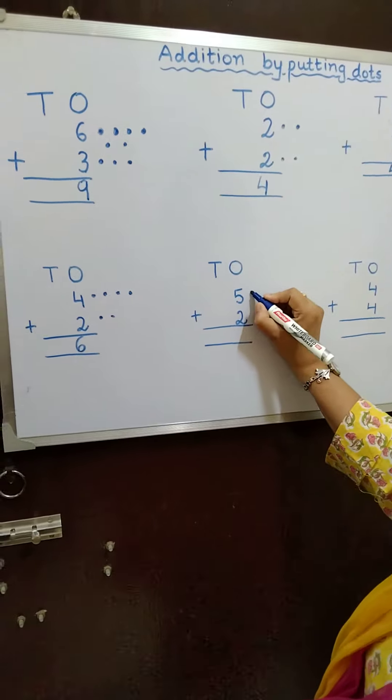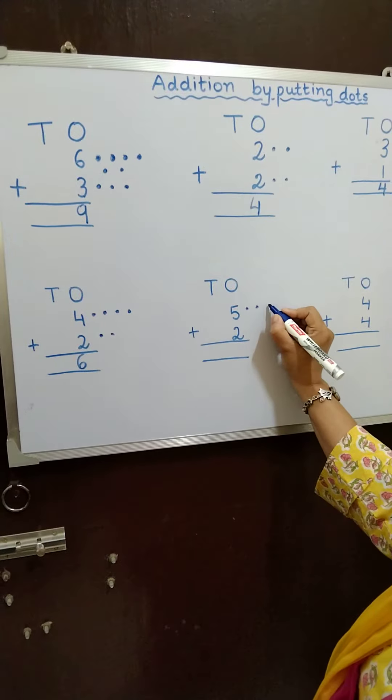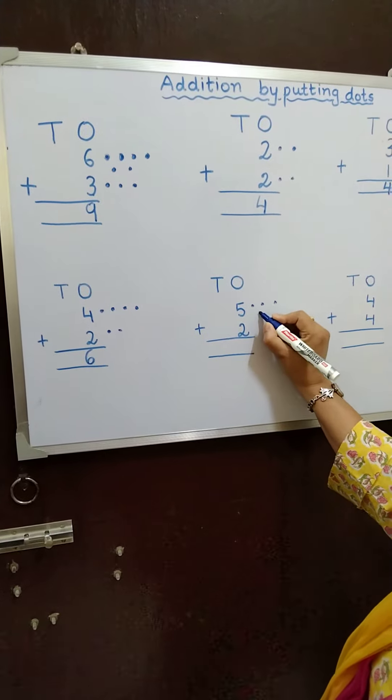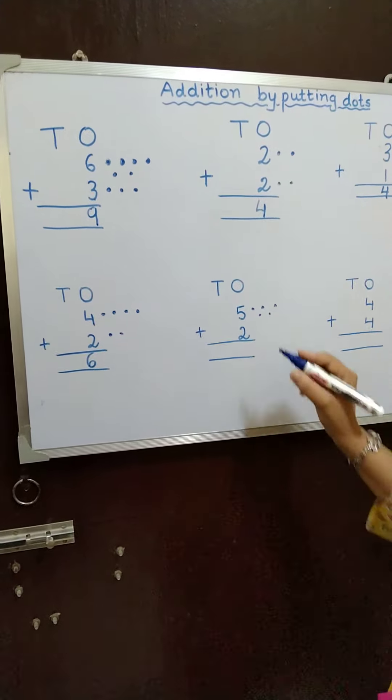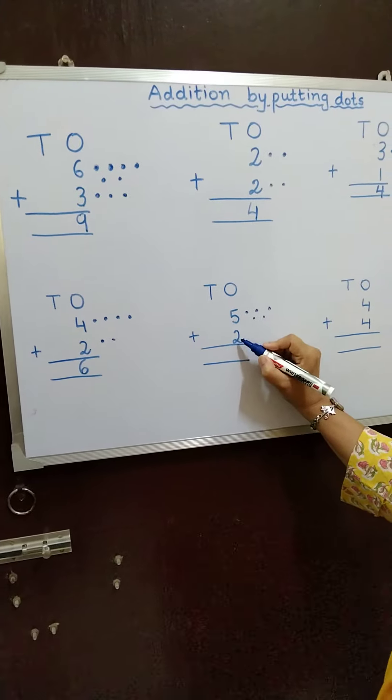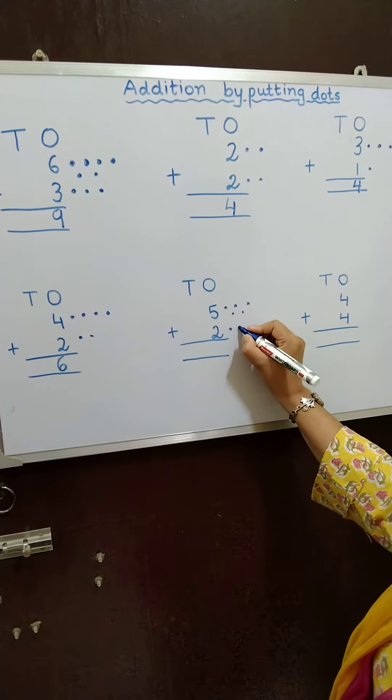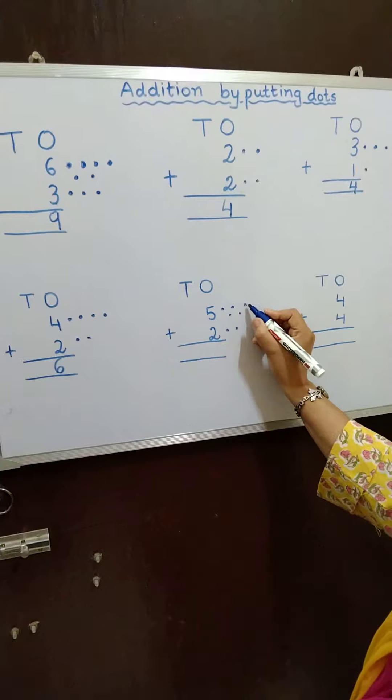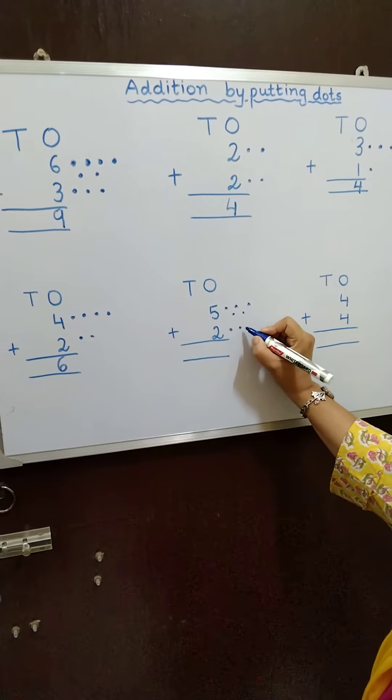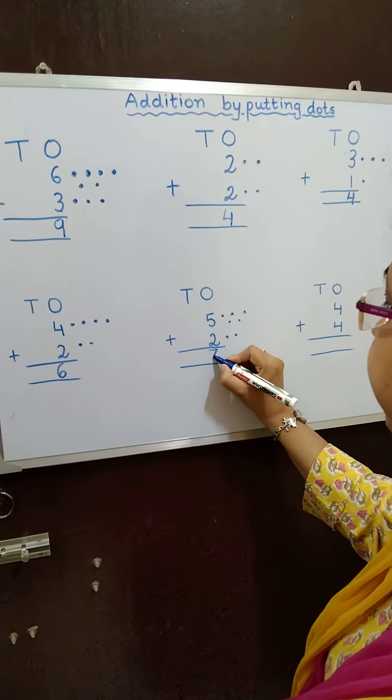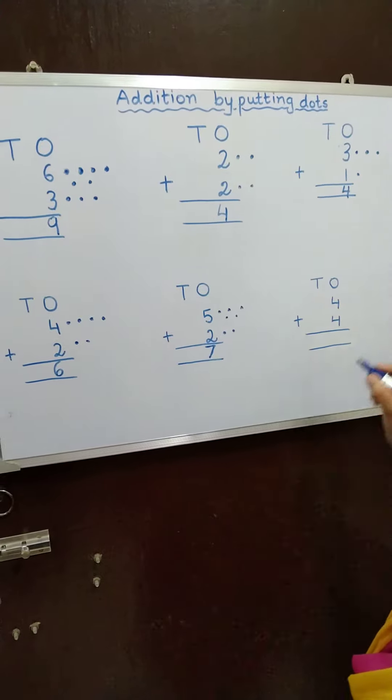5. I will have to draw 5 dots. 1, 2, 3, 4, 5. Which number is this? 2. So 1, 2. Now counting: 1, 2, 3, 4, 5, 6, 7. Yes.